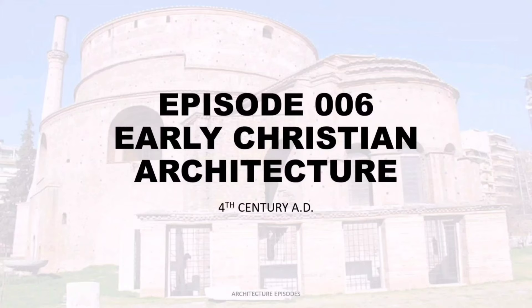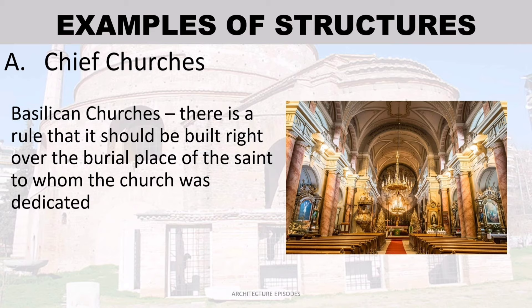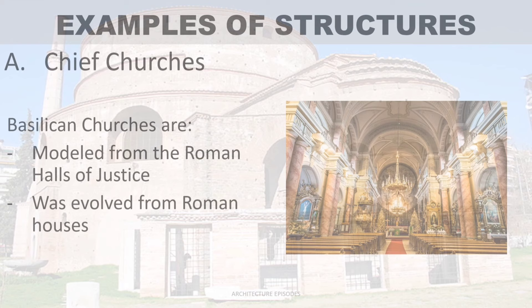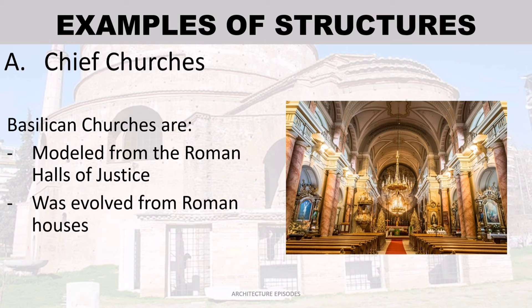Episode 6: Early Christian Architecture from the 4th century AD, Part 2. Chief churches — in basilican churches, there is a rule that the church should be built right over the burial place of the saint to whom it was dedicated. Over this burial place, the crypt or confession was the high altar, covered by a ciborium, also known as a tabernacle or baldacino. Basilican churches are modeled from the Roman halls of justice and evolved from Roman houses.